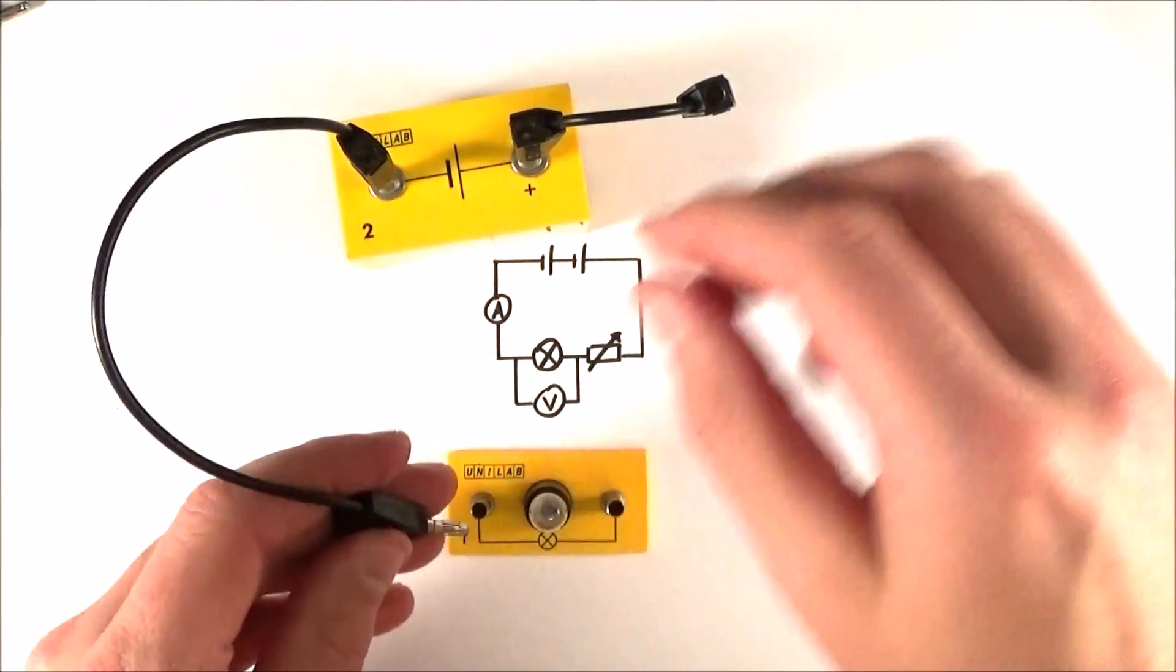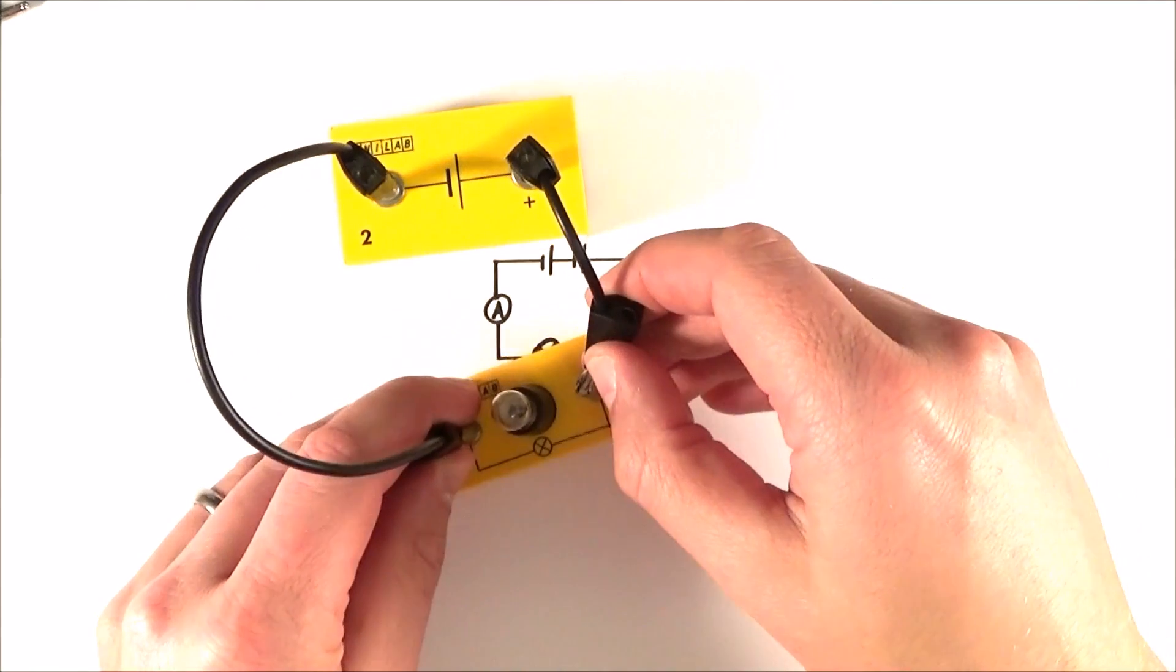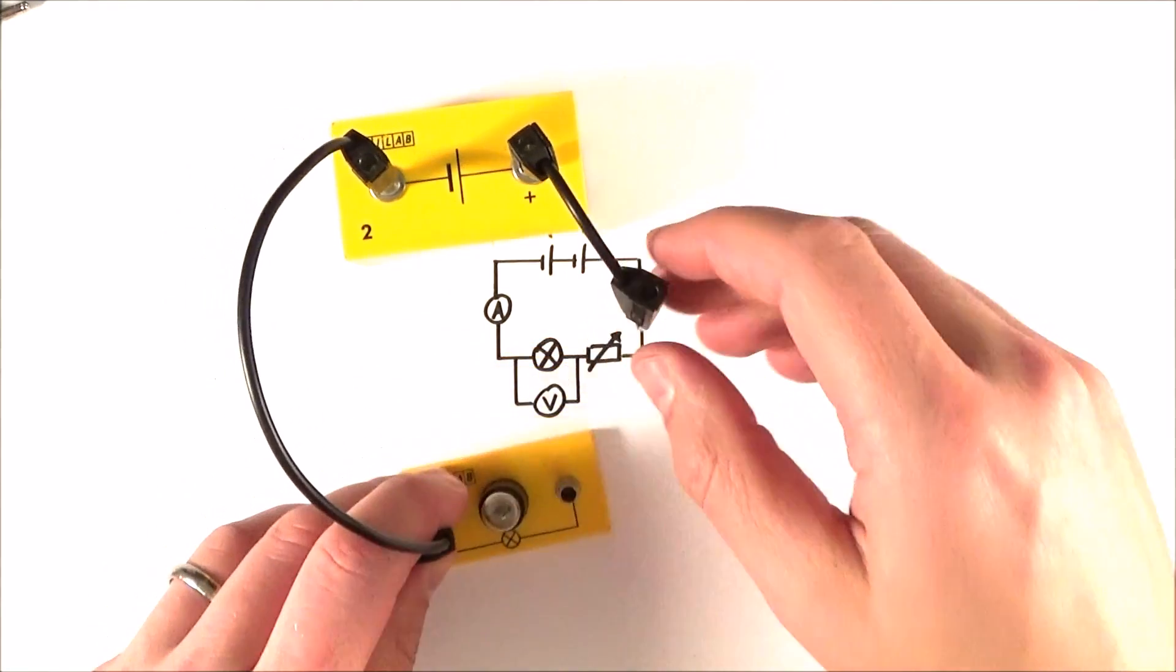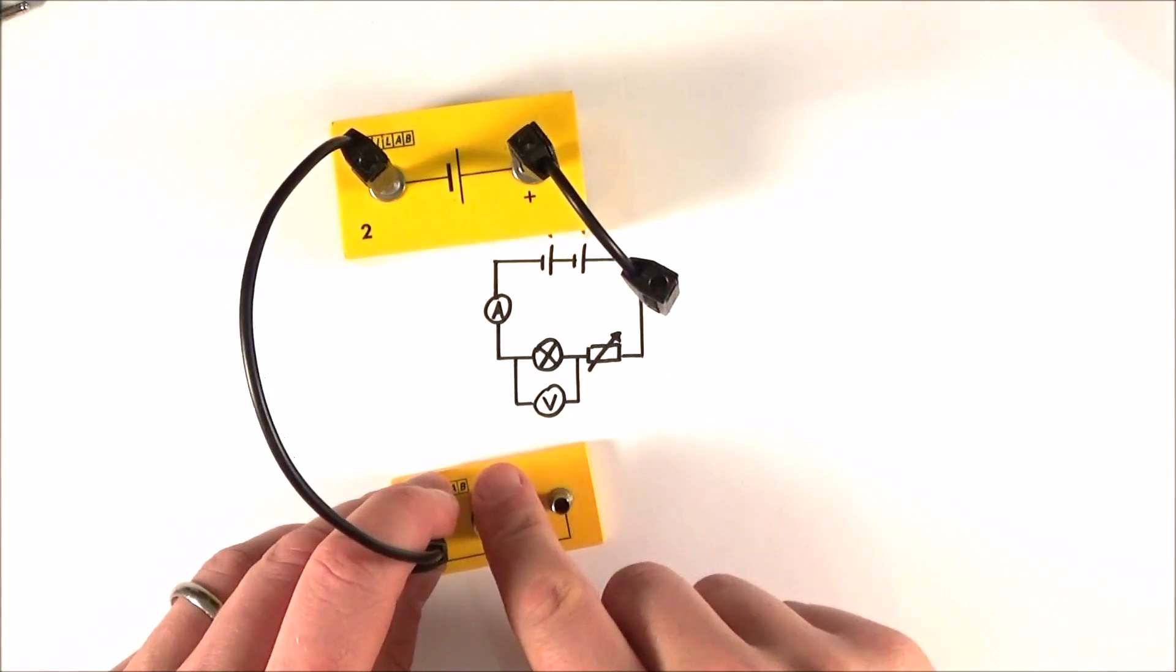Now what I'm going to do is check that this is working. So if I connect it up, we do get some light out. So I know that this cell works, and so does the lamp.